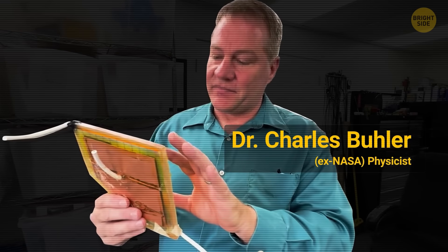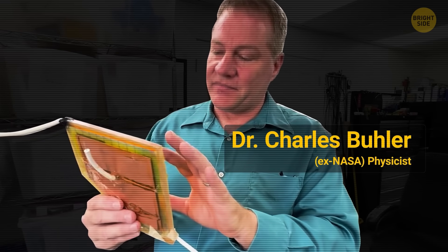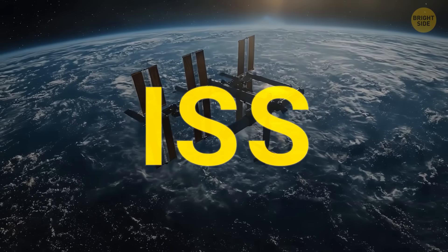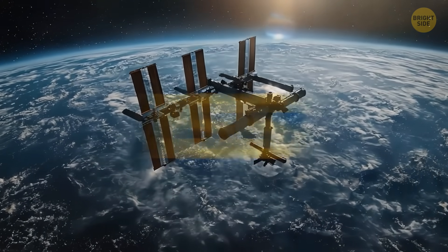The engineer's name is Charles Buehler. He used to work for NASA, making sure rockets don't blow up randomly. He was part of the Space Shuttle, Hubble, ISS, and other huge projects.